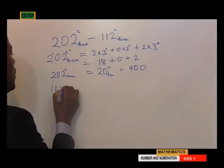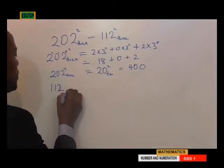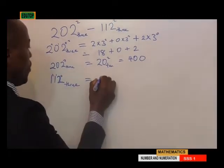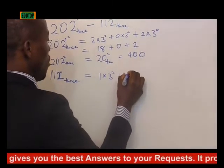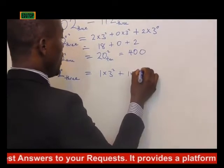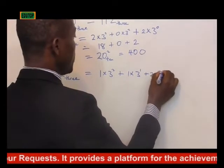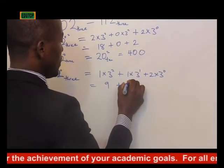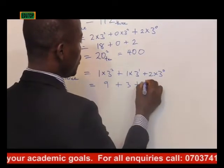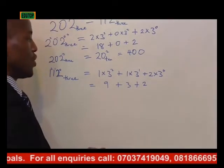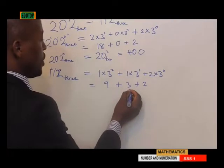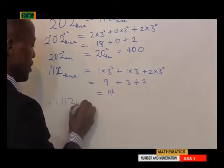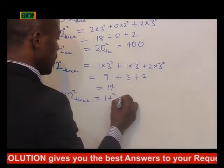Let's convert 112 base 3. The digits are 1, 1, 2. That will be 1 times 3 squared, plus 1 times 3 raised to the power of 1, plus 2 times 3 raised to the power of 0. So 1 times 9 is 9, plus 1 times 3 is 3, plus 2 times 1 is 2, giving us 14. Therefore, 112 base 3 squared equals 14 squared, which equals 196.